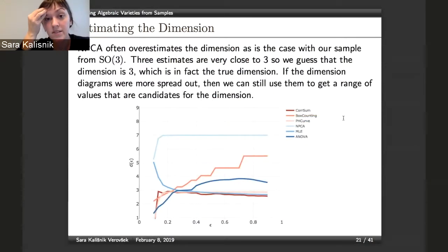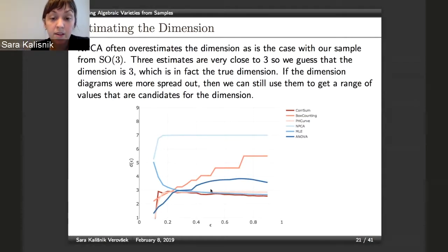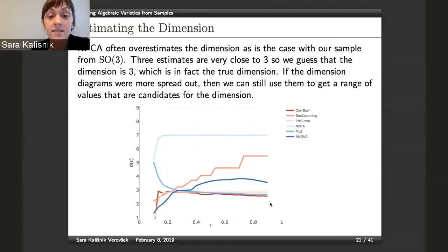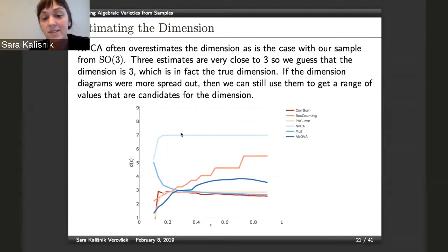This is a sample from SO3. You can see that three of these estimates are very close to three over a range of ε values, and this is in fact the true dimension. But NPCA again overestimates — according to NPCA, you would say it's seven.